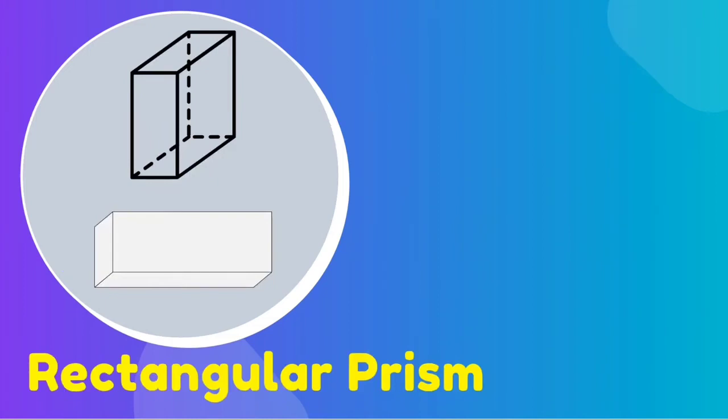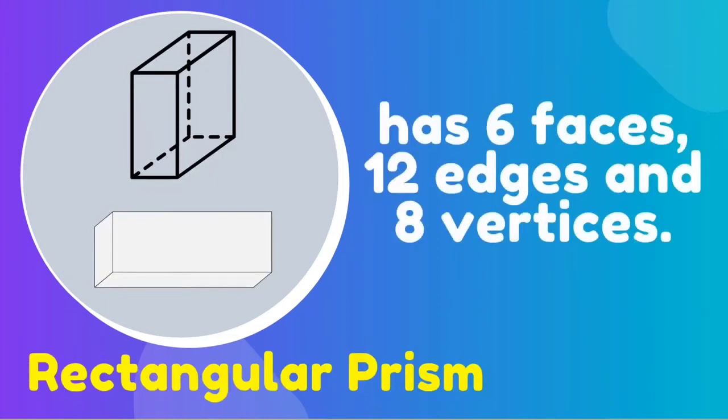Next is the rectangular prism. It has six faces, twelve edges, and eight vertices.